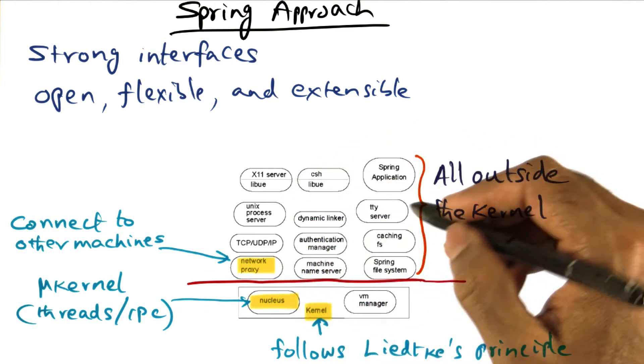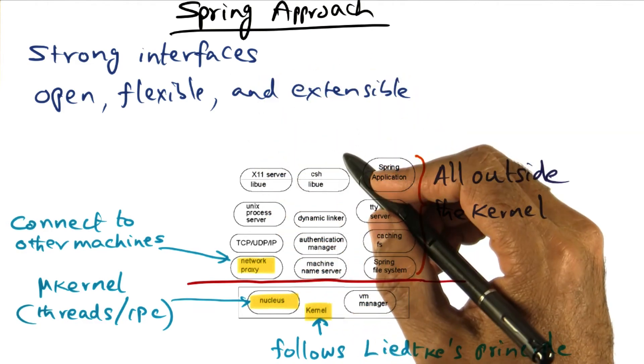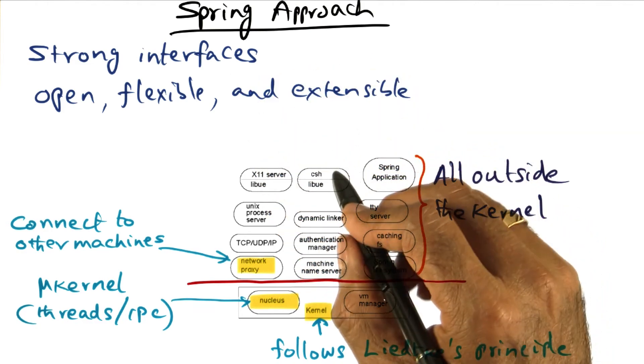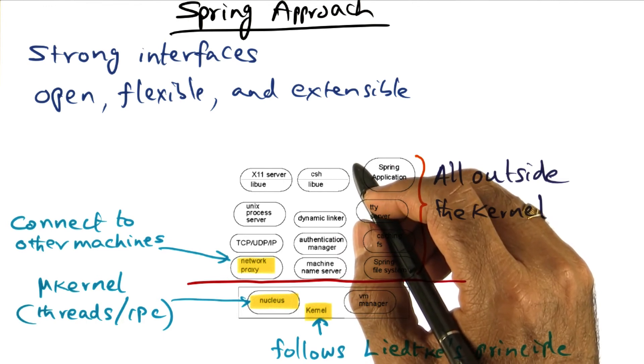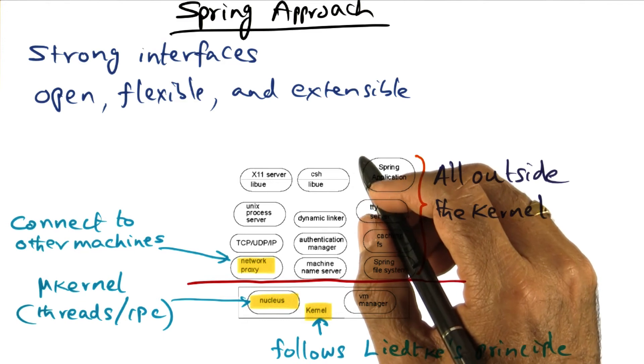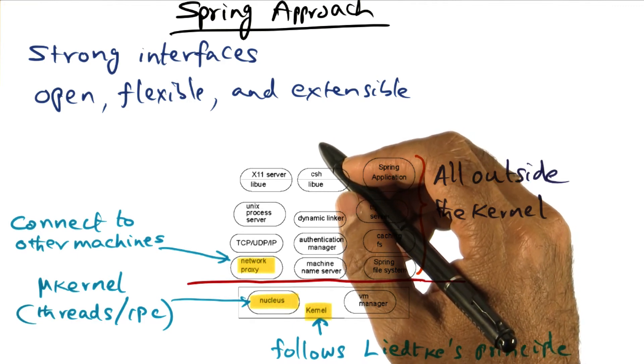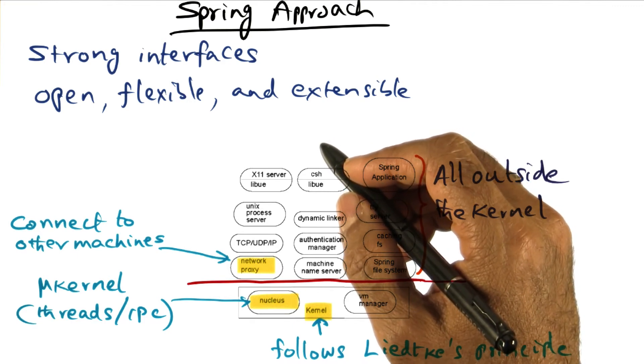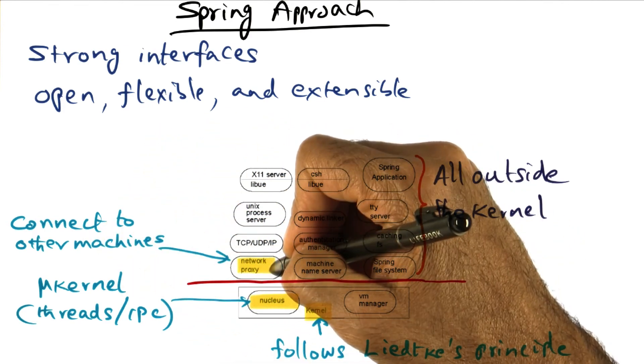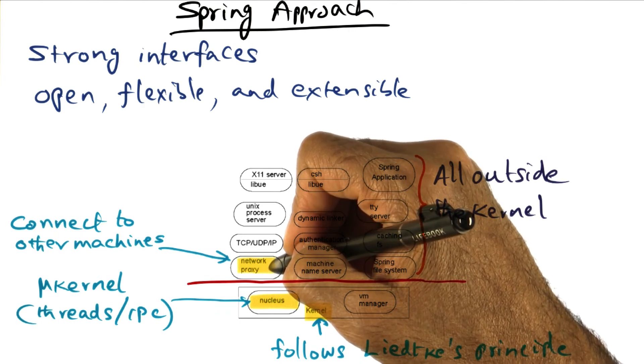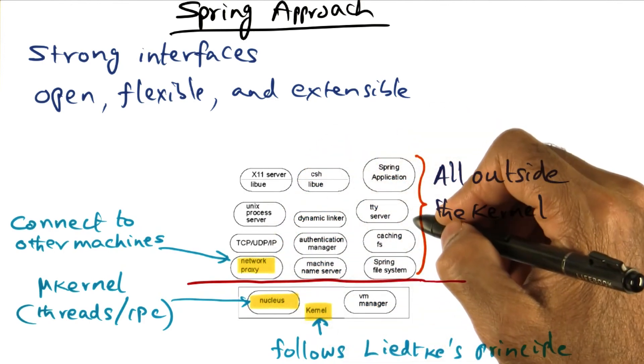Everything else is outside the kernel. All the things that are above the red line are outside the kernel. In particular, I mentioned that Spring is Sun Microsystems' answer to building a network operating system, because this was a time when transitioning was happening to services being provided on the network. So they wanted to go from an operating system that runs on a single node to a network operating system using the same interface, namely the Unix interface. And so this entity that you see here, which is called the network proxy, we'll see more of it in later discussion in this lesson. This is the entity that allows machines to be connected to one another.